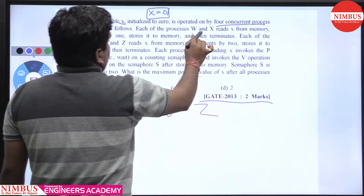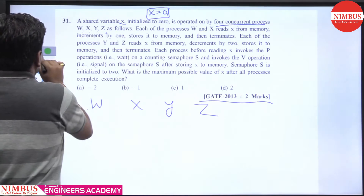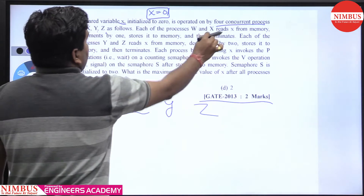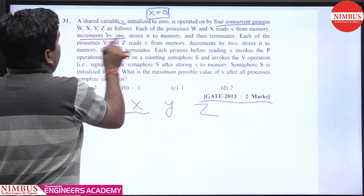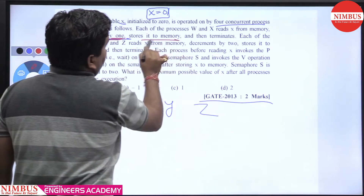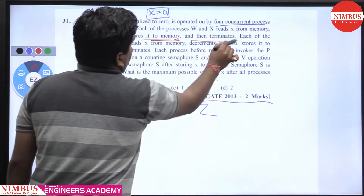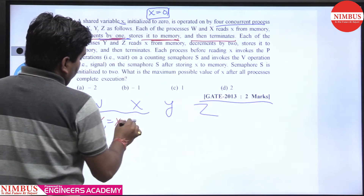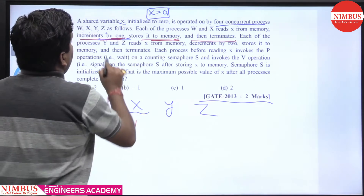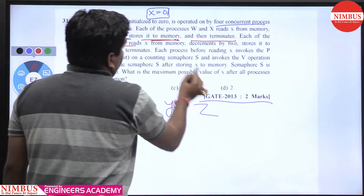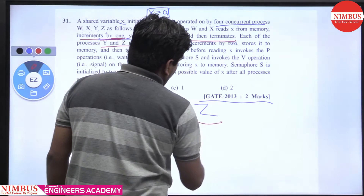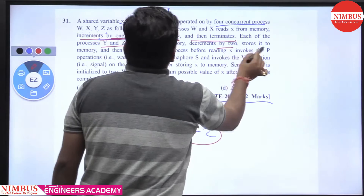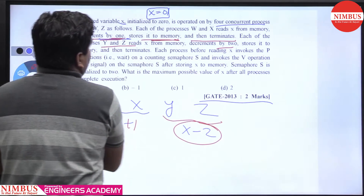Each of the processes w and x reads x from memory, increments it by 1, and stores it back to memory, then terminates. And each of y and z reads x from memory and decrements by 2, stores it to memory, then terminates.